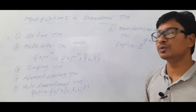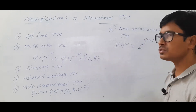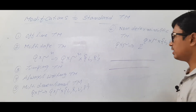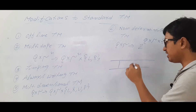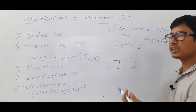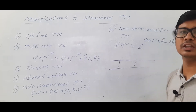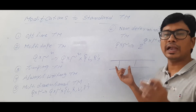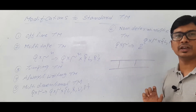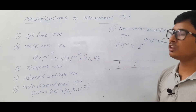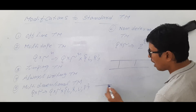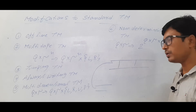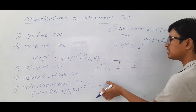The first one is the offline Turing machine. In the standard Turing machine, we take input, store it on the tape, and the output is also stored on the tape, modifying the input in place. But what the offline Turing machine proposes is that you have the input separately, and you copy it onto the tape. So you still retain the original input while the copy on the tape is modified.